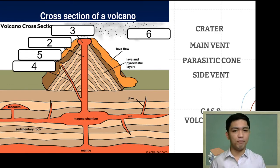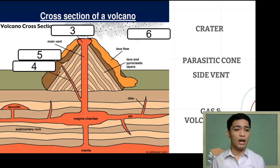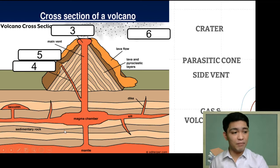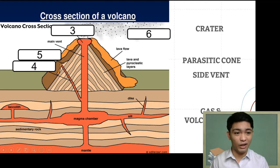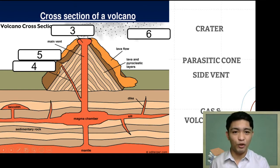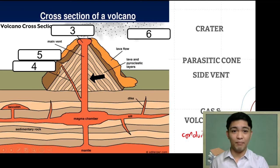The second part is what we refer to as the main vent. The main vent is the weak point in the earth's crust where hot magma is able to rise from the magma chamber and reach the surface — basically the opening in the earth's crust where magma comes out. Before reaching the main vent, magma has to go through a channel or pipe, which is what we refer to as the conduit — the pipe or channel through which magma travels leading to the main vent.